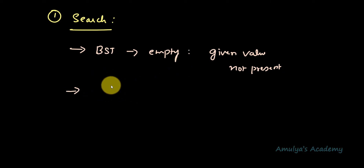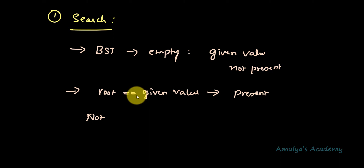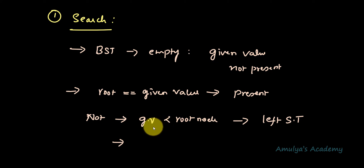If the tree is not empty, it will compare the value of the root node with the given value. If they are equal, that means the given value is present in the BST. If the given value is not equal to the key of the root node, then check whether the given value is less than the root node. If yes, you need to search the left subtree, since the value would be on the left side of the root. If not, the given value is greater than the root node, so you need to search in the right subtree.